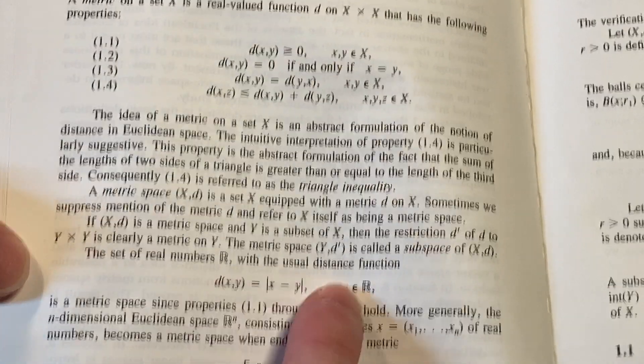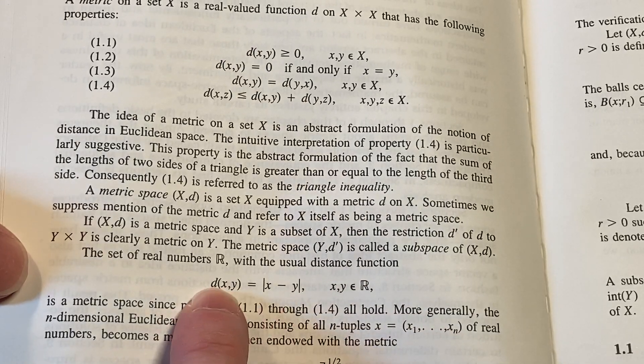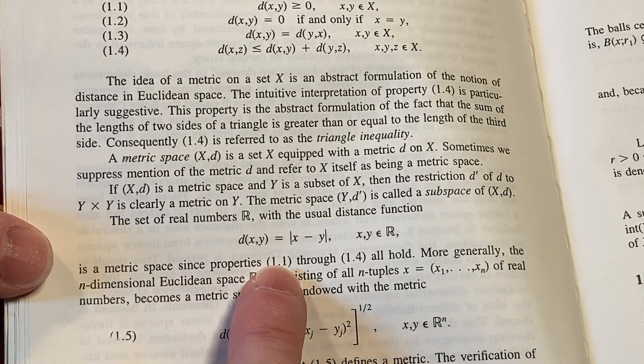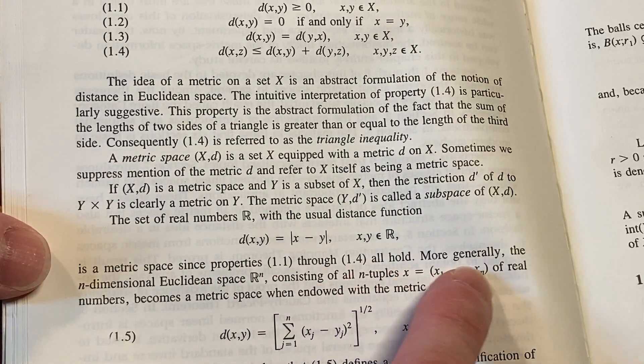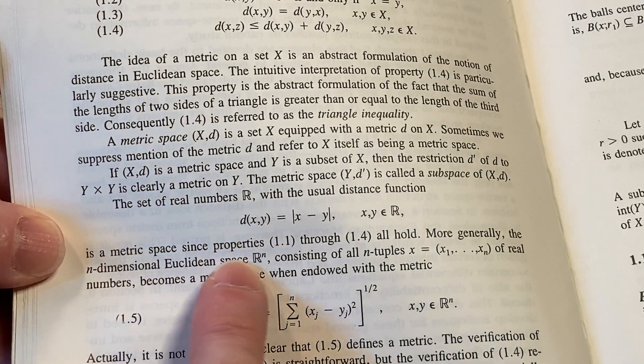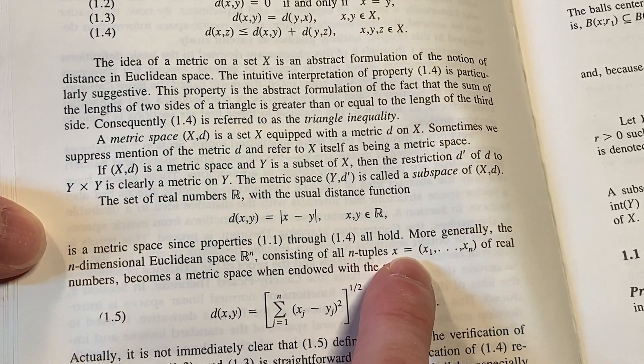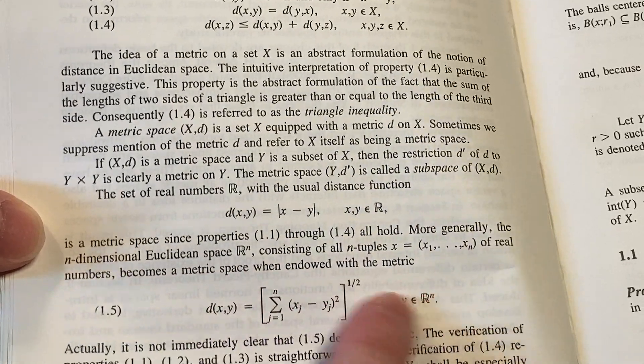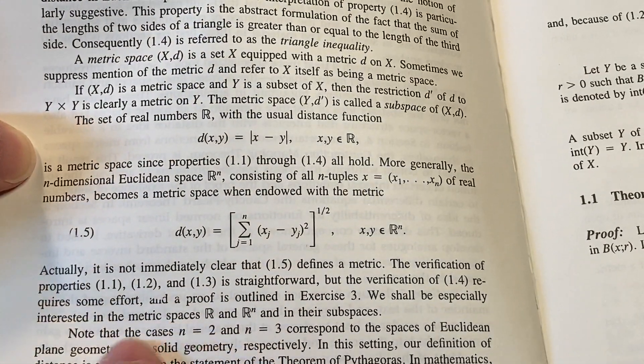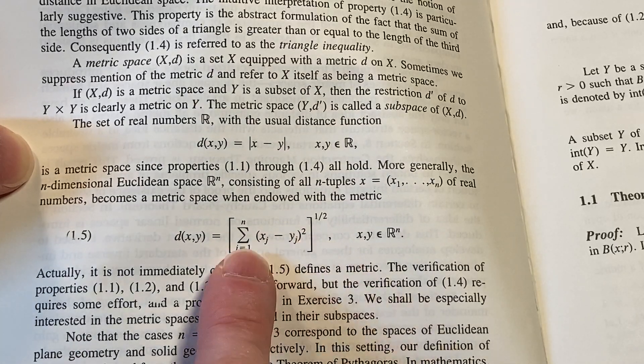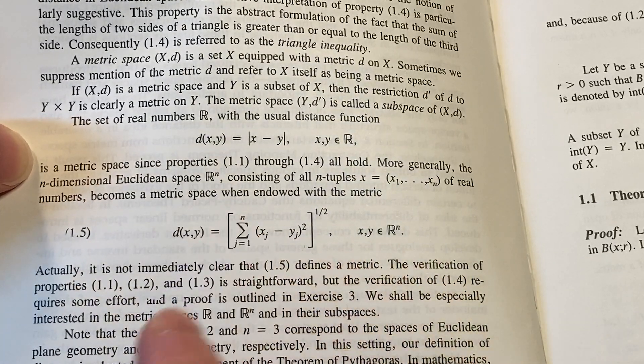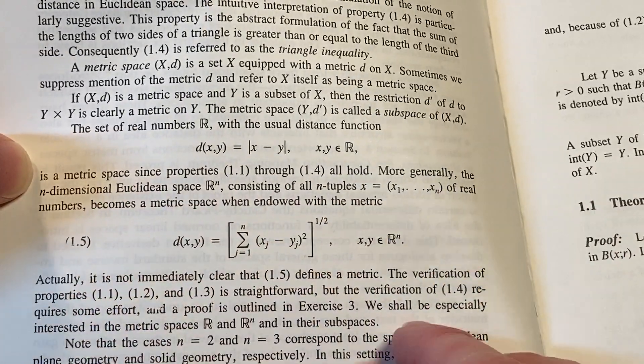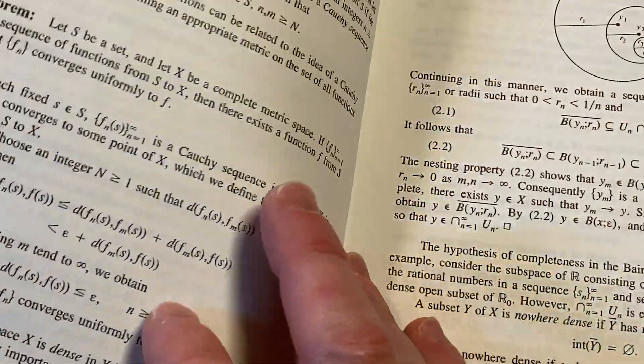The set of real numbers R with the usual distance function here, the distance between x and y is the absolute value of x minus y for x, y in R, is a metric space. Its properties 1.1 through 1.4 all hold. More generally, the n-dimensional Euclidean space R^n, consisting of all n-tuples x equals (x_1 through x_n) of real numbers becomes a metric space when endowed with this metric here. Really cool. Now, by the way, in two dimensions, this would be the square root of x1 minus y1 squared plus the quantity x_2 minus y2 squared. So it'd be something like that. But it does have, and again, it does have exercises.